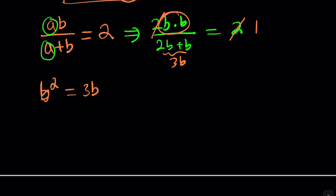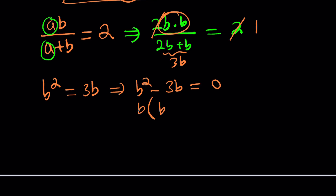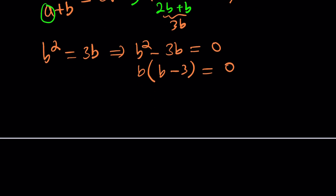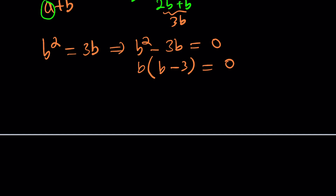This is a nice quadratic because we can put everything on the same side and easily factor. We can factor out a b: that'll be b times b minus 3 equals 0. From here, we get two solutions. The product is 0, so each factor can be 0. So we get b equals 0, or b equals 3.